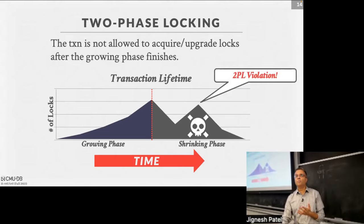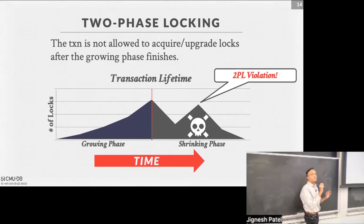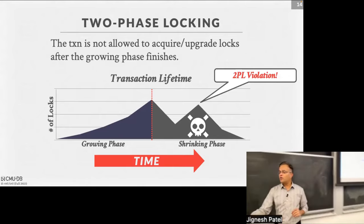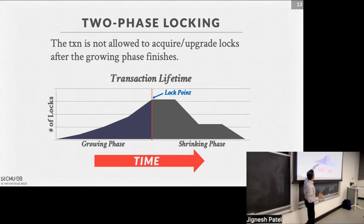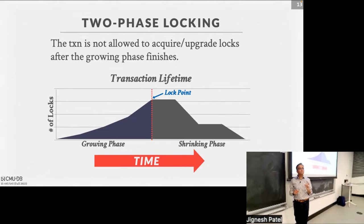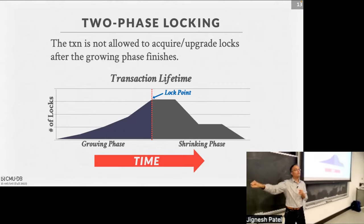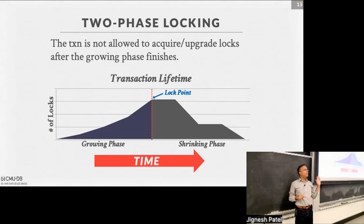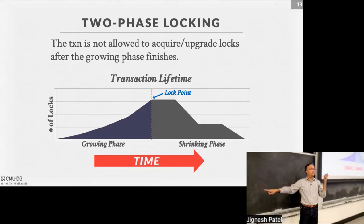If I look at the life of a single transaction — with time on the x-axis and number of locks on the y-axis — in the first growing phase it's acquiring locks, reaching a lock point, and then in the shrinking phase it starts dropping. Once it shrinks, it cannot go back up and acquire new locks. The transaction that reaches the lock point first is the one that will be first in the final serial schedule. So whoever gets to all the locks they need — whoever reaches the top of the mountain first — that determines the order in the serializable schedule.